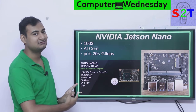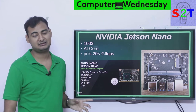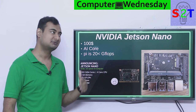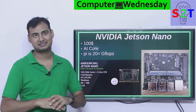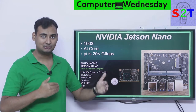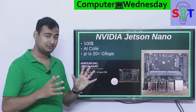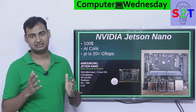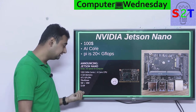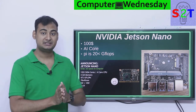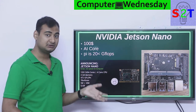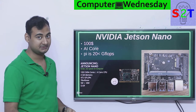The Jetson Nano goes up to 472 gigaflops — that's almost half a teraflop. To put that in context, that's GTX 1070 kind of power. Of course, the GTX 1070 is around 1.5 teraflops, but this is literally full desktop GPU processing power in a small form factor. Many low-end laptops have that kind of power. It's really powerful, and it only requires 10 watts at maximum performance, making it very efficient with power.